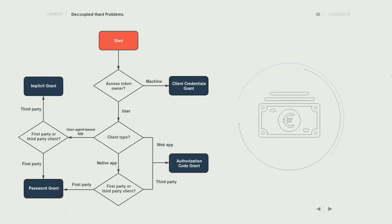That's called the authorization code grant and requires human interaction. For other scenarios — like a Java daemon that runs on a server and makes authenticated requests to Drupal on every cron execution — you don't have a user to click around. You might not even have a user at all since it's just a machine. For that you would use the client credentials grant.